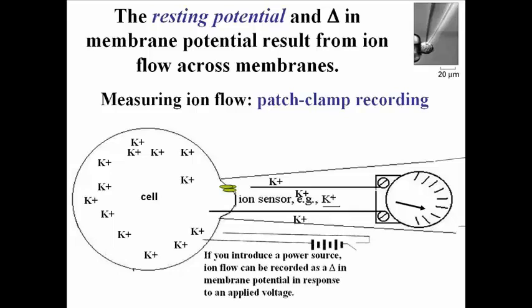You can also introduce a power supply with electrodes that penetrate the cell so that you can give the cell a little jolt that will cause a local depolarization. If you depolarize the cell, you can also measure ion flow. And if you measure ion flow in response to a synthetically generated electrical potential difference, you are looking at a voltage-gated ion channel.